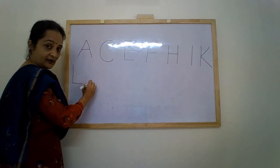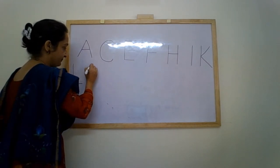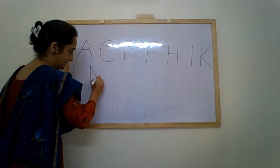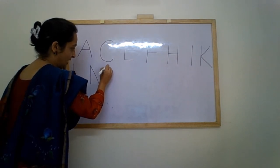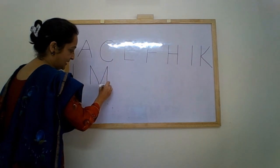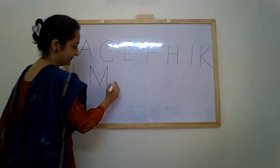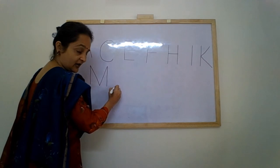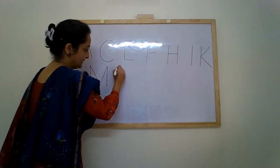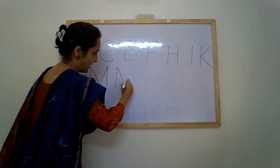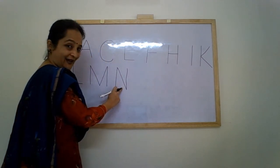Keep your crayon down, go straight up, slanting line down, slanting line again, go up, come down, come down — is letter M. Keep your crayon down, again go up, down, up — is letter N.